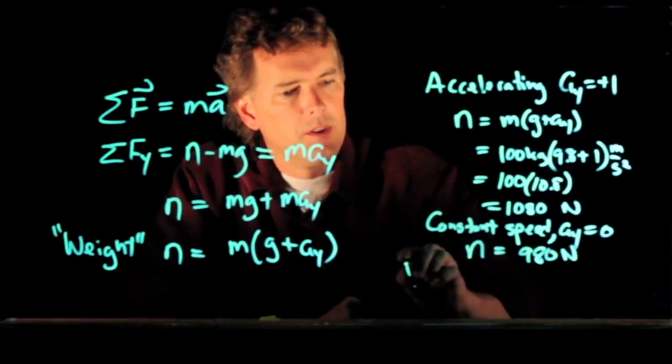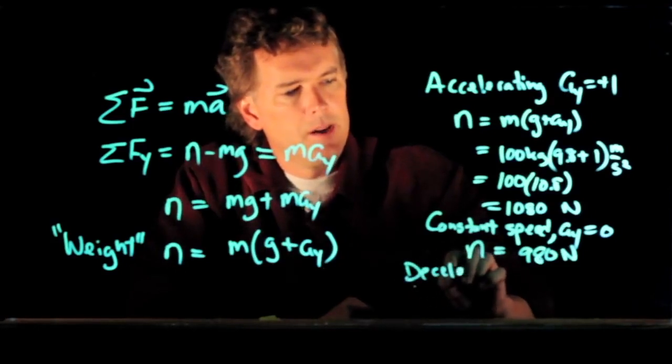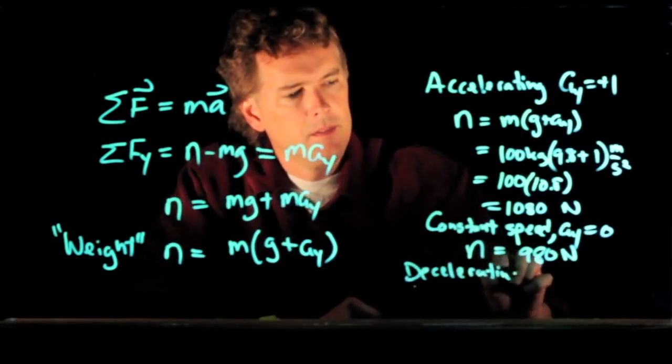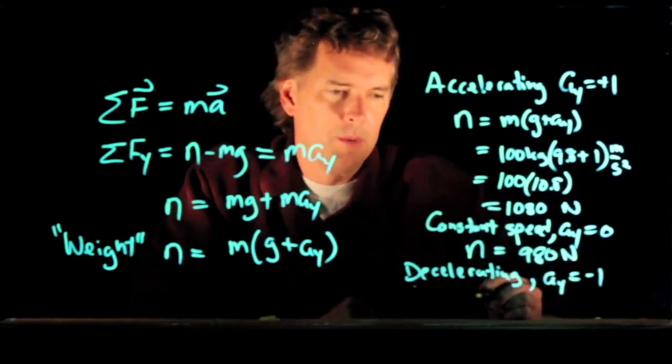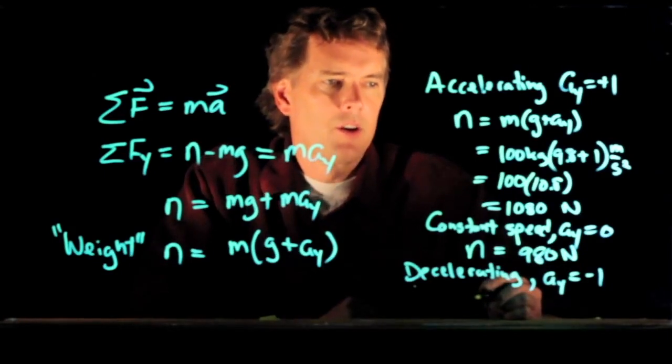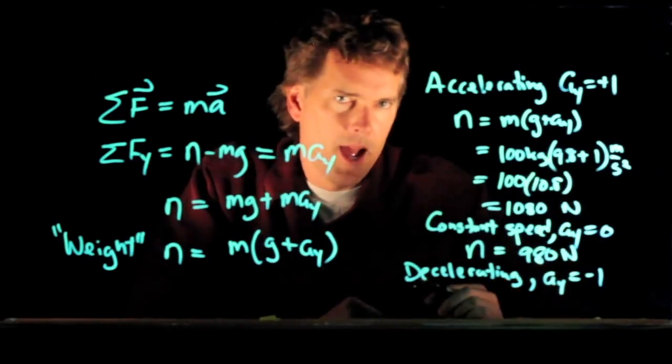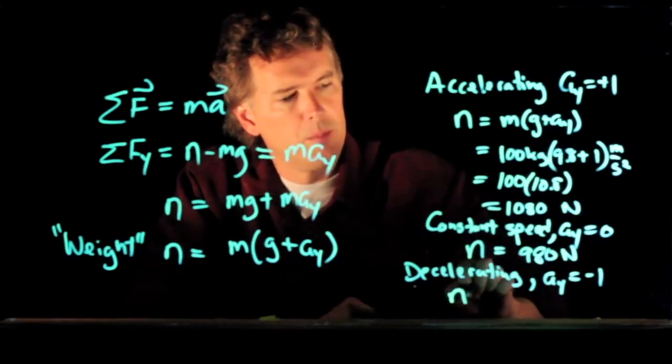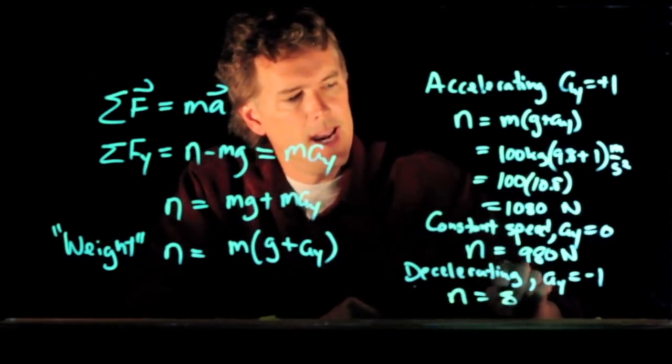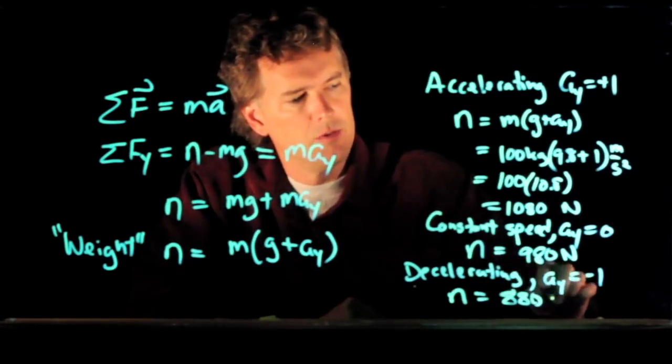If we go to the case where you are decelerating with a_y equals minus one meter per second squared, you subtract one from 9.8, which is 8.8 times 100, and we end up with N equals 880 newtons.